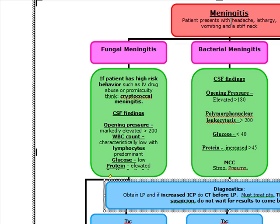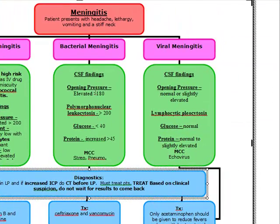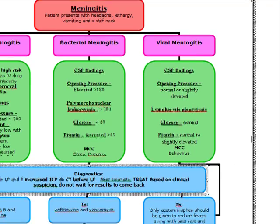Even though bacterial meningitis also has a low glucose level, they're going to have a polymorphonuclear leukocytosis and they won't have the high-risk behaviors of IV drug abuse or promiscuity. Our most common cause of bacterial meningitis is strep pneumo. Most common cause fungal: cryptococcal meningitis, stained with India ink. Bacterial: strep pneumo. Viral: echovirus.